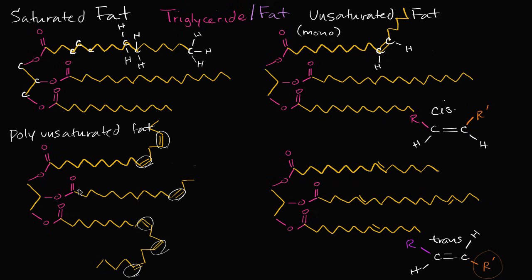So what's going on with the molecule that has double bonds but stays straight? These are actually in the trans configuration — the rest of the carbon chains are on opposite sides of the double bond. Notice this carbon chain is above the double bond while this other chain is below it. Because of that, no kink forms. This is called a trans fat.